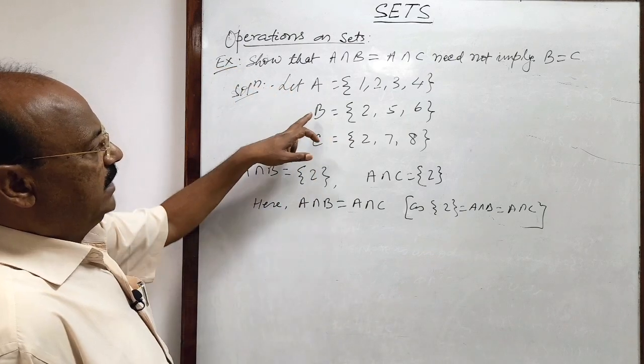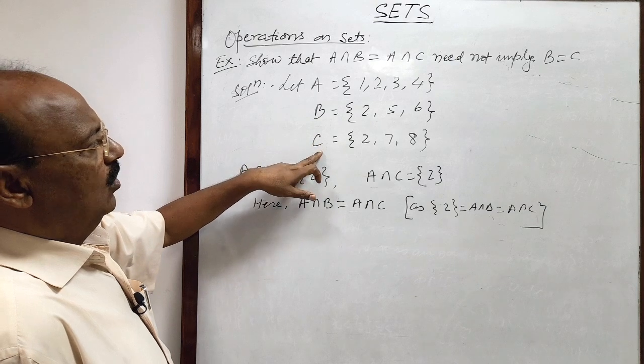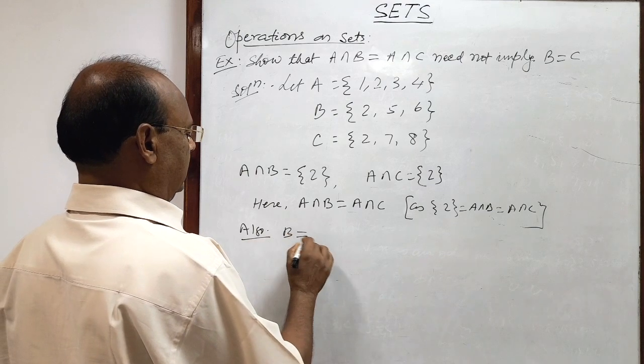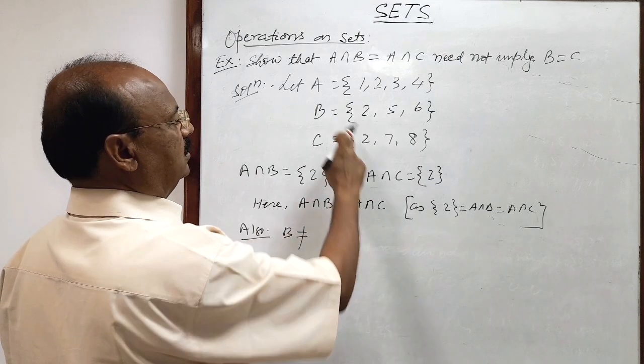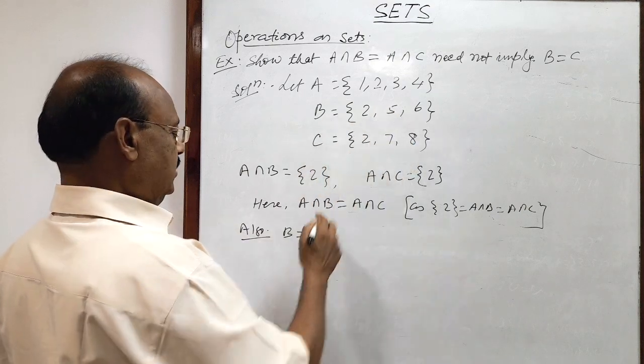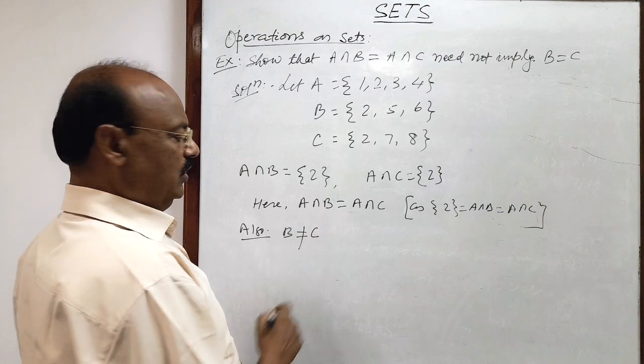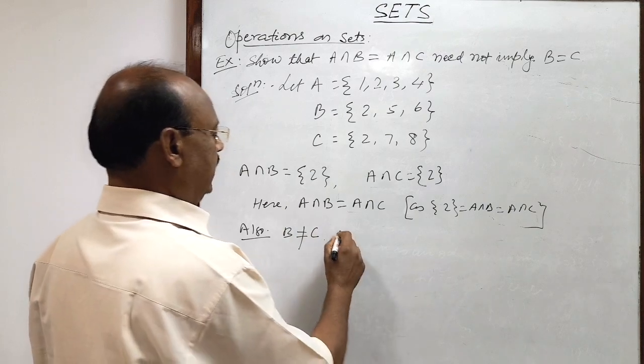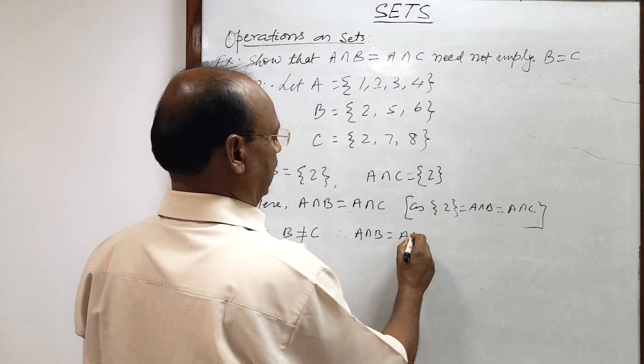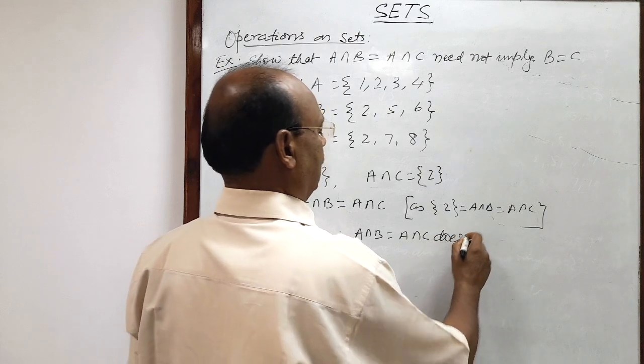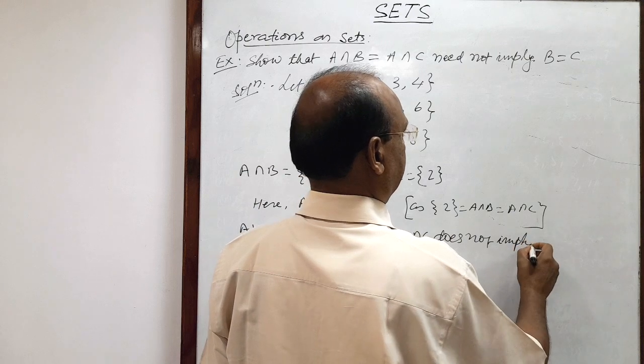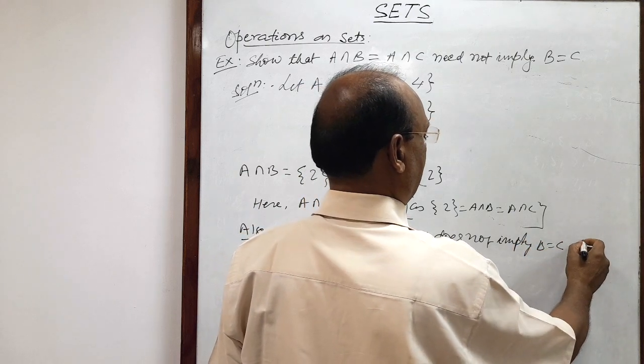But here we see that B is not equal to C. Also here we find that B is not equal to C because these two sets are different sets having some different elements. Therefore, A intersection B is equal to A intersection C does not imply B is equal to C. Proved.